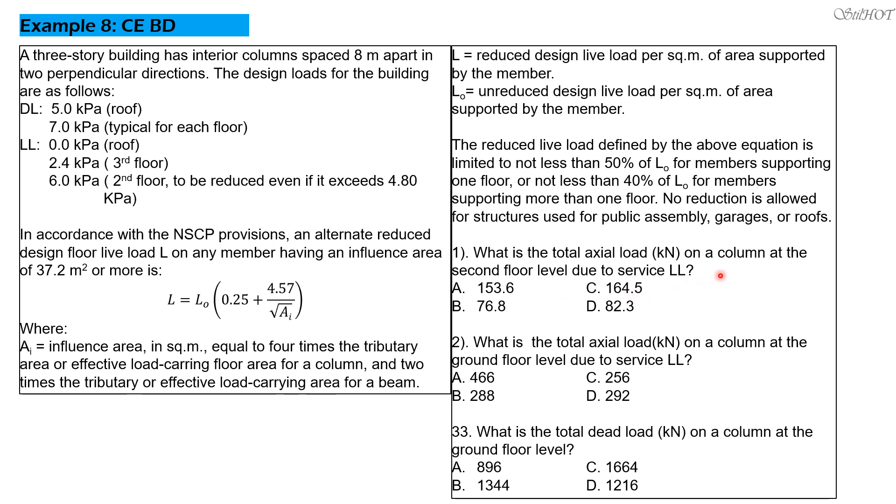Question 1: What is the total actual load in kilonewtons on a column at the ground floor level due to service live load? So that would be reduced live load at the third floor level plus live load at the roof level. Because there's no live load at the roof level, it's just reduced live load at the third floor level. Question 2: What is the total actual load in kilonewtons on a column at the ground floor level due to service live load? Question 3: What is the total dead load in kilonewtons on a column at the ground floor level? You may answer number 3 first before 1 and 2 because number 3 is easy to answer, this is just dead load.